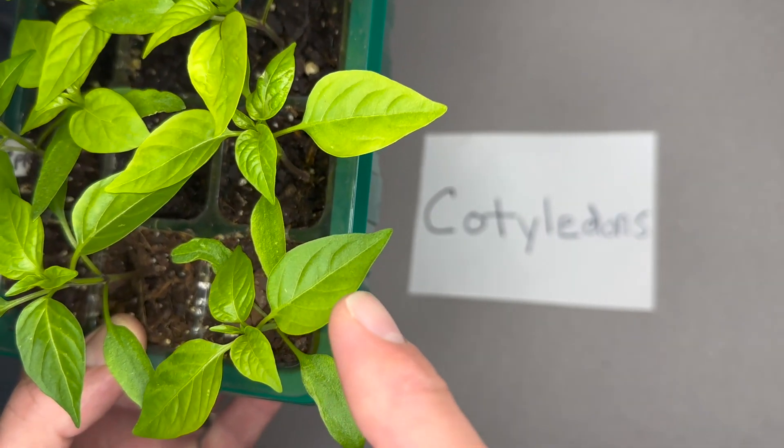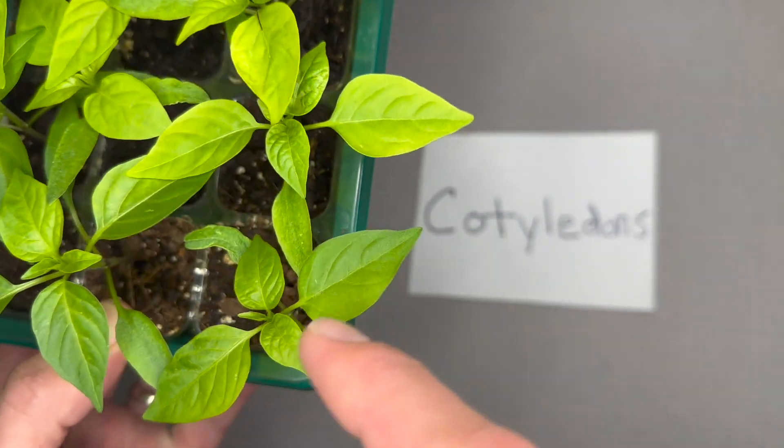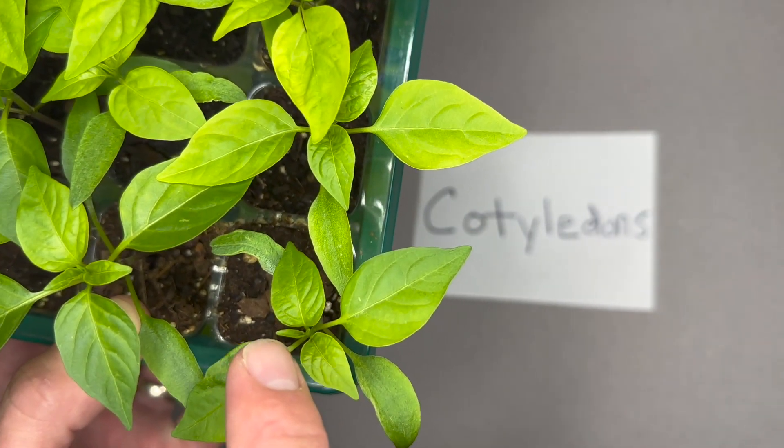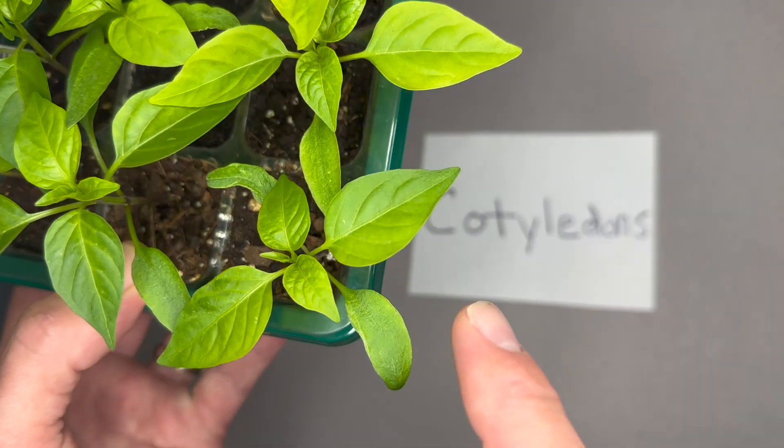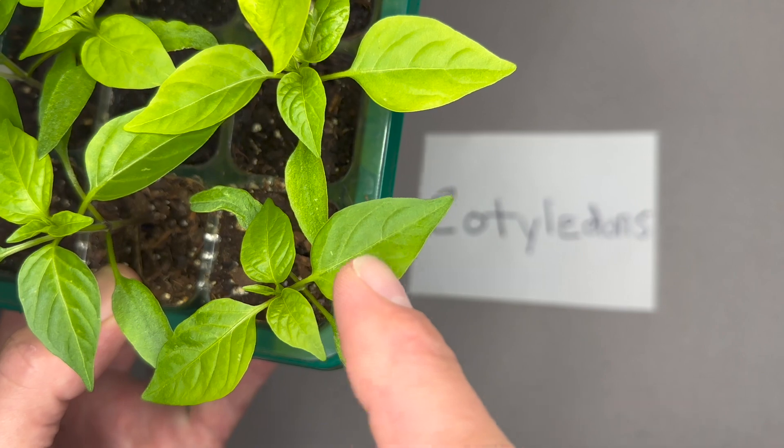So the first set of true leaves is this one here. See, it's the first one that came up, and then you actually have a second set, and you can see a third set going right here. So this is not a true first leaf - that's a cotyledon - and that's your true first leaf, second, third.